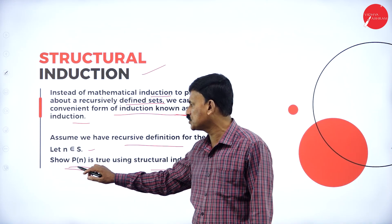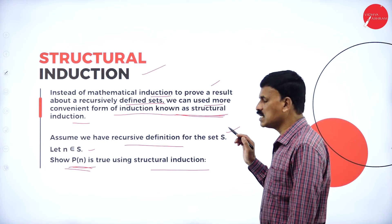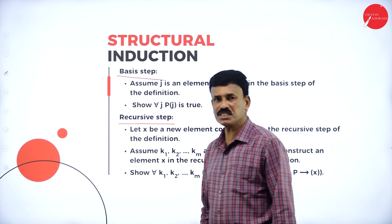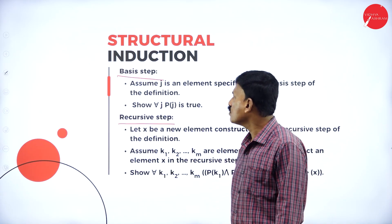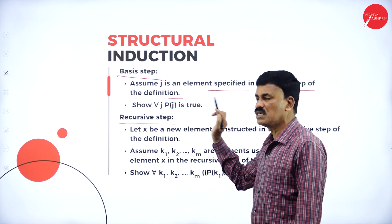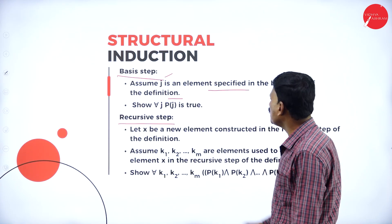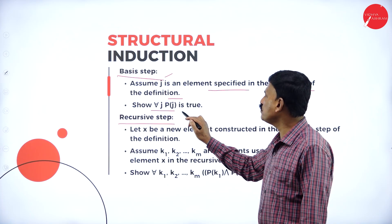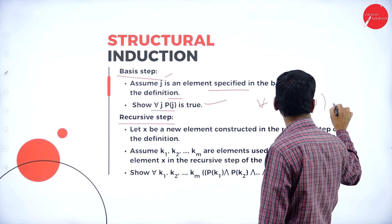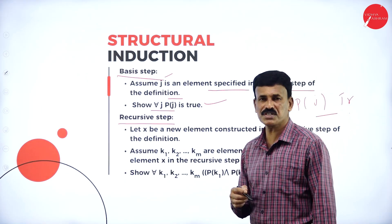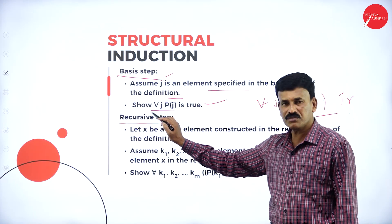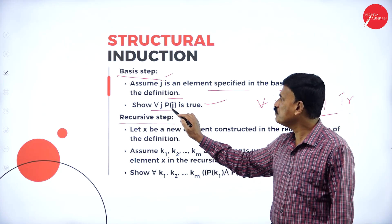The basic step: assume that J is an element specified in the basic step of the definition, and show that for all J, P(J) is also true. This is the first step — verify that P(J) is true for all J specified in the basic step of the definition.